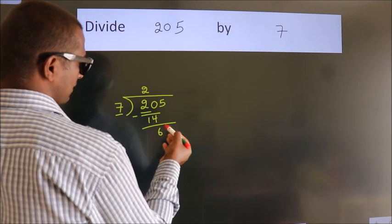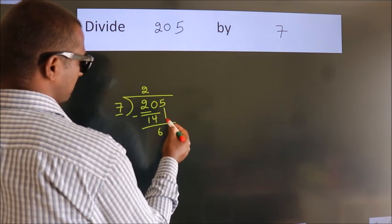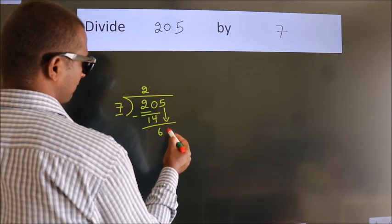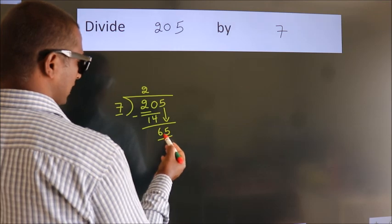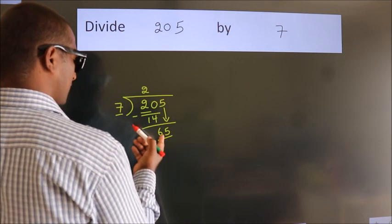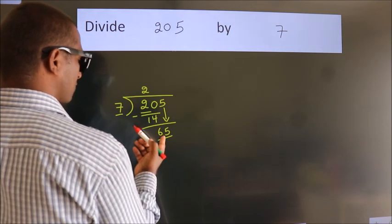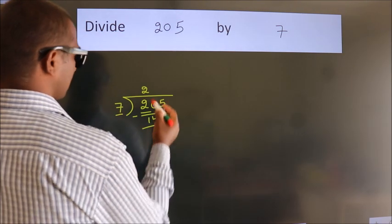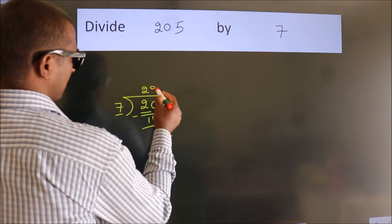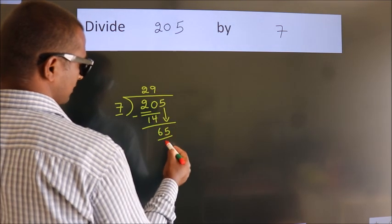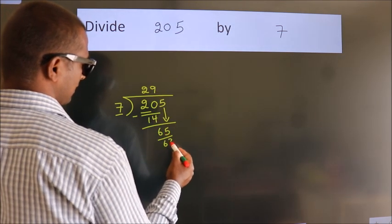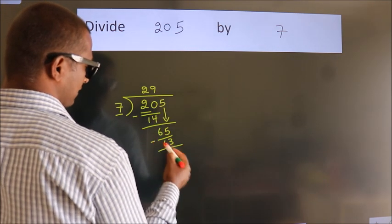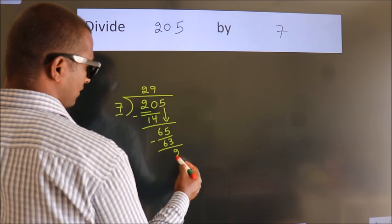After this, bring down the beside number. So 5 comes down, giving us 65. A number close to 65 in the 7 table is 7 nines 63. Now we subtract and we get 2.